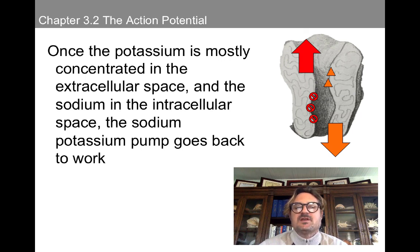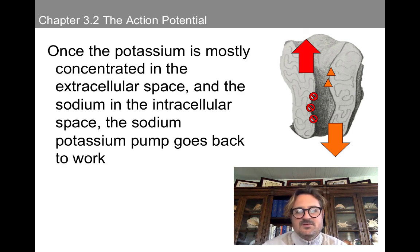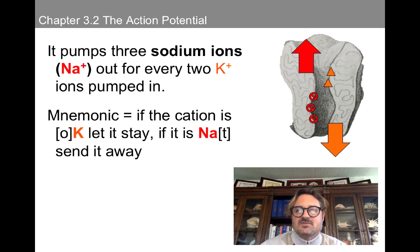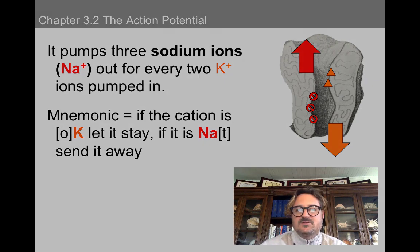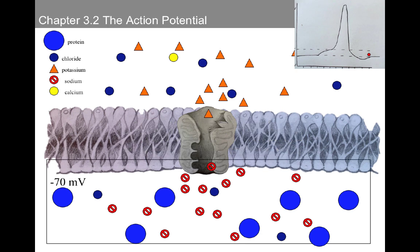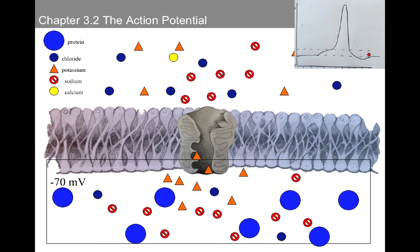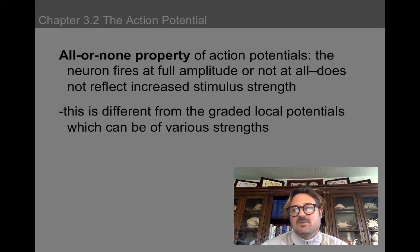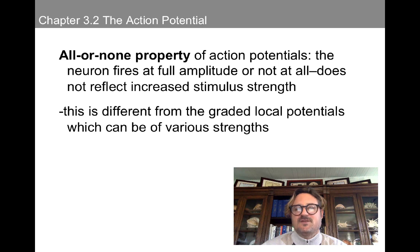Once the potassium is mostly concentrated in the extracellular space and sodium in the intracellular space, the sodium-potassium pump goes back to work. It pumps three sodium ions out for every two potassium ions pumped in. The sodium-potassium pump pushes sodium out of the neuron and draws potassium into the neuron, which doesn't dramatically affect the charge of the intracellular space but restores the distribution of ions to what it was before. At this point, we finish the action potential.